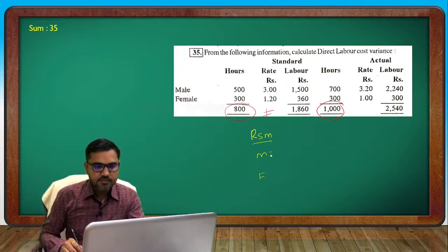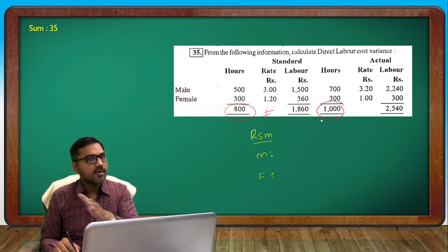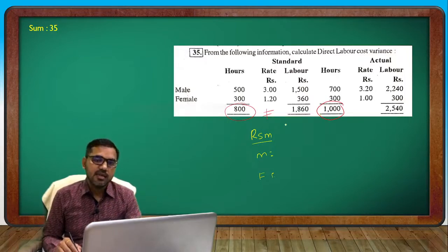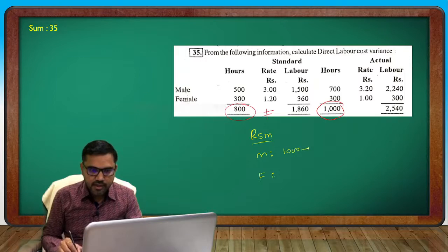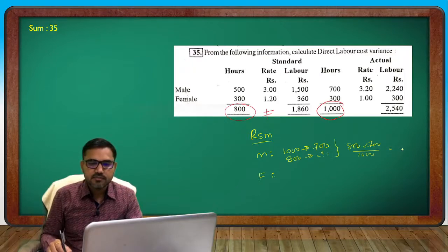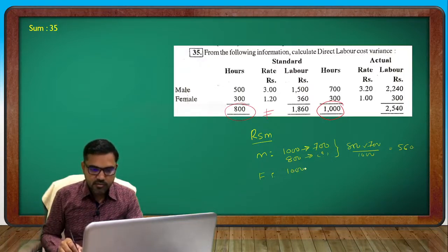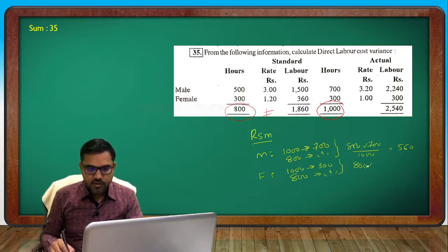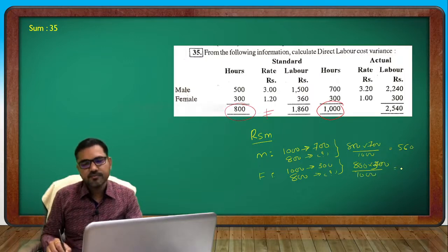RSM means Revised Standard Mix. Here we have 1000 total actual hours. We cannot change actual. We can check the standard. If total hours are 1000, male had 700 and female 300. If we revise 800 to 1000: 800 into 700 divided by 1000 = 560. Female: 800 into 300 divided by 1000 = 240.